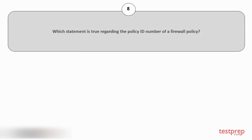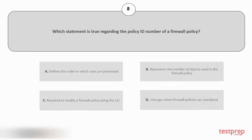Question number 8. Which statement is true regarding the policy ID number of a firewall policy? Your options are: A) defines the order in which rules are processed; B) represents the number of objects used in the firewall policy; C) required to modify a firewall policy using the CLI; D) changes when firewall policies are reordered.